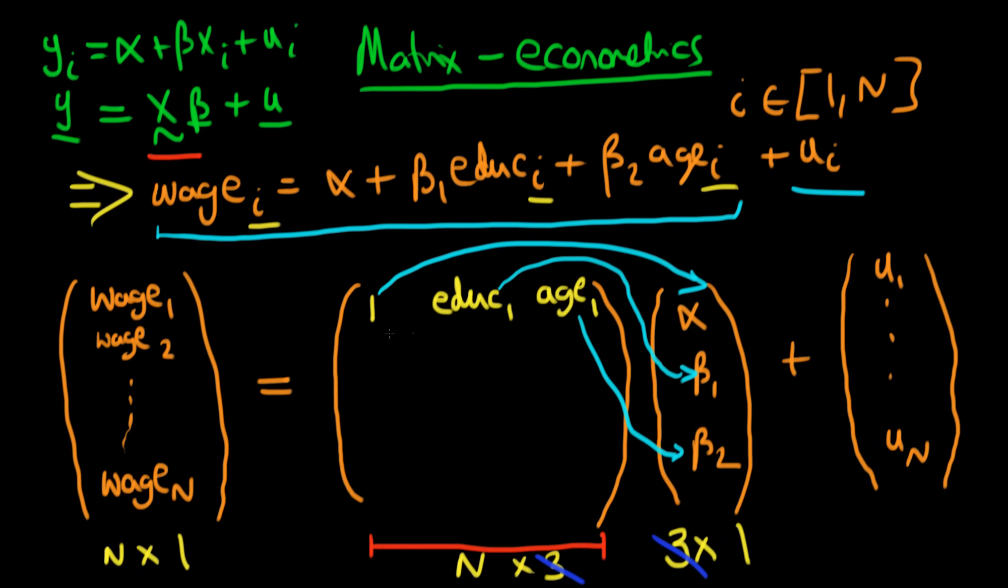So we've written down the first row. What about the second row? Well, that's just easy. The first entry is 1, the second entry is their level of education, and the third entry is their age. Oh sorry, that's the age of individual 2, rather than 3.